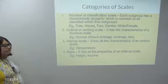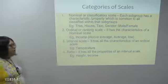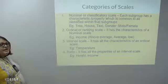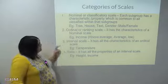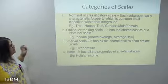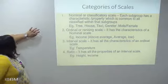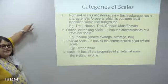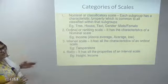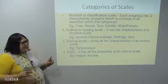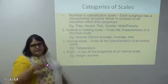A nominal or classificatory scale is the lowest of the four levels. Each subgroup has a characteristic property common to all members — for example, gender can be male or female. The categories are not more or less but simply different from one another — they are mutually exclusive and exhaustive. The numbers serve only as labels or tags for identifying or classifying objects, not reflecting any amount of the characteristic.